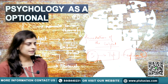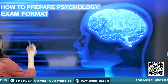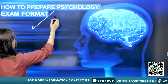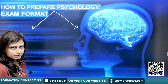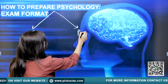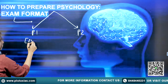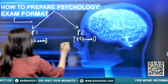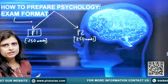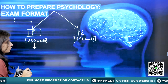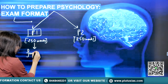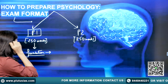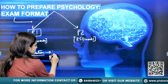Moving to the second part — how are you going to prepare this optional, that means how are you going to approach the subject. As I told you, we have two papers: paper one and paper two. That is the typical exam format with 250 marks each. Paper one is basically a theoretical paper — it is going to act as the foundation of your subject. So majority of theories, majority of whatever psychology you are going to study, you are going to study in this paper.